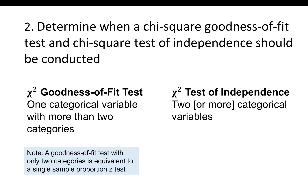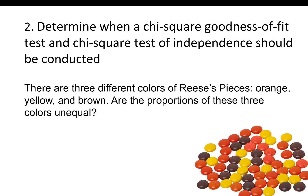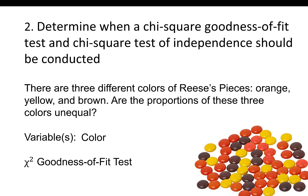Let's look at examples of selecting the appropriate test. There are three different colors of Reese's Pieces: orange, yellow, and brown. Are the proportions of these three colors unequal? The variable here is color — a categorical variable with three levels. Because there is one categorical variable with more than two levels, we should conduct a chi-square goodness of fit test.